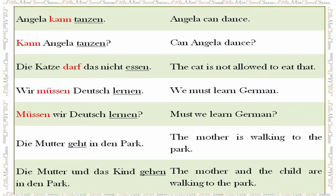'Die Katze darf das nicht essen' — the cat is not allowed to eat that. Notice we have the modal verb 'darf' and the infinitive 'essen' at the end. 'Wir müssen Deutsch lernen' — we must learn German. Same principle: modal verb followed by infinitive at the end. 'Müssen wir Deutsch lernen?' — must we learn German? In the question, inversion applies: the modal verb is at the beginning and the infinitive remains at the end.